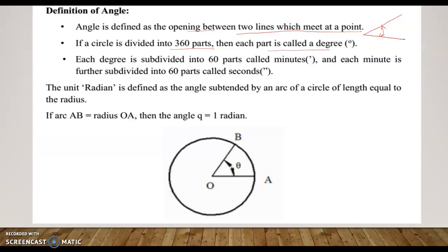Each degree can be further subdivided into 60 parts called minutes, and each minute is further subdivided into 60 parts called seconds. Minutes are represented with one symbol and seconds with another symbol. Another unit of angle is the radian, which is defined as the angle subtended by an arc of a circle of length equal to the radius.